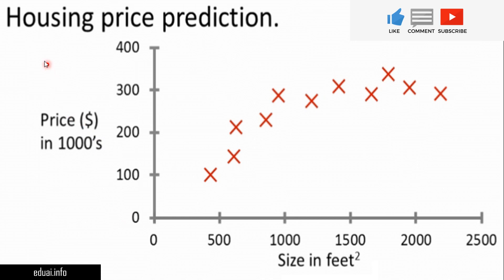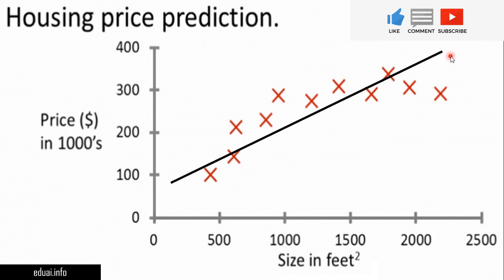We have seen this example to predict the housing price, where on the x-axis the size of the house is given in square feet and on the y-axis the price of the house is given in thousand dollars. These are the datasets we have plotted, and this looks really linear — that's why we have used the linear regression algorithm. But the main question here is: how is this best fitting line drawn by the machine?